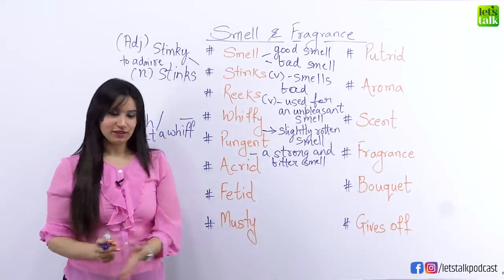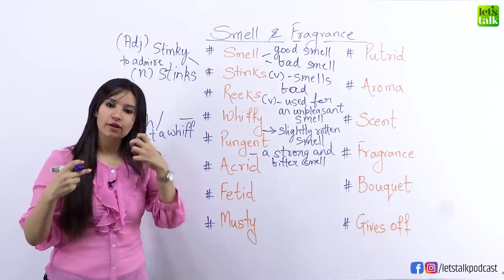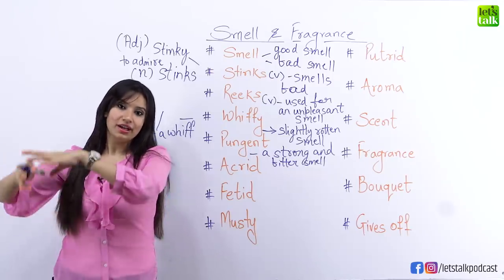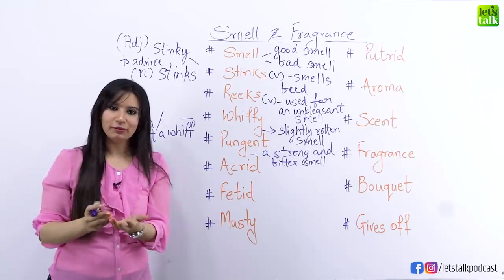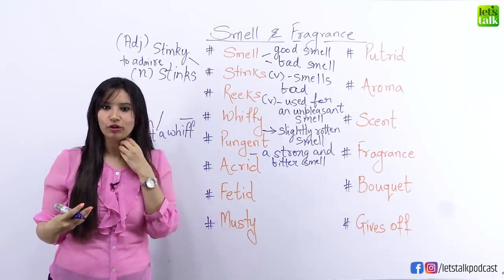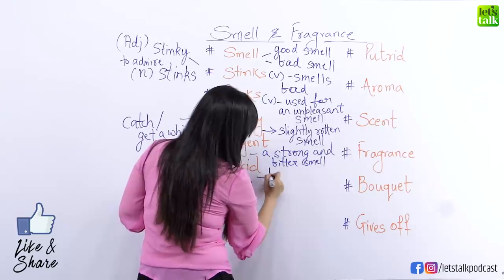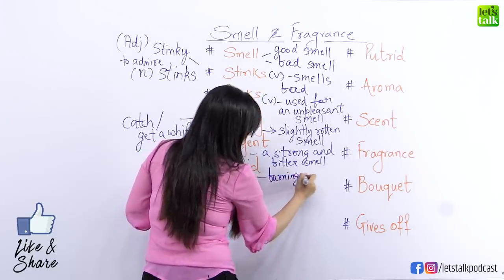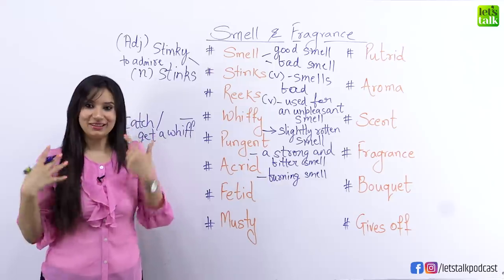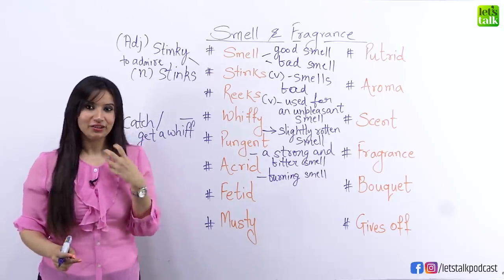Staying on with the negative smells, the next one is an 'acrid' smell. Acrid is a kind of smell when you taste something burning. So if you pass a building which caught fire some time ago, you can see clouds of smoke rising and when you pass by, you have an acrid smell — that burning sensation in your throat and mouth where you're just not able to breathe and you're feeling choked. Acrid is a burning smell so strong you almost start tasting it in your mouth.